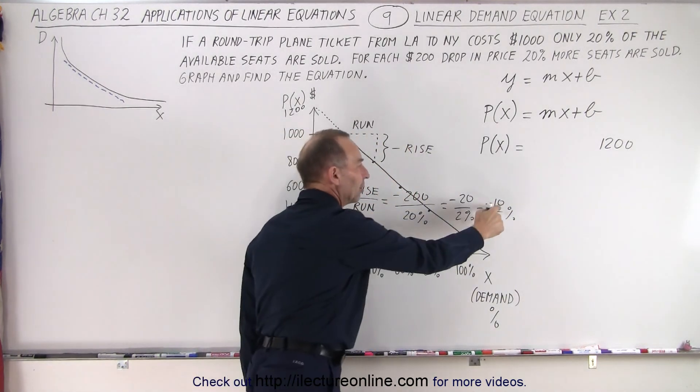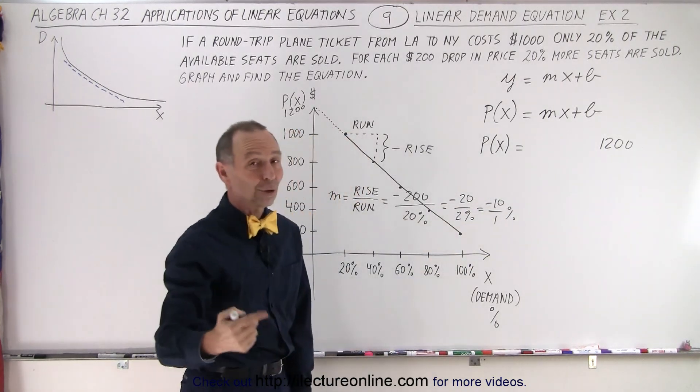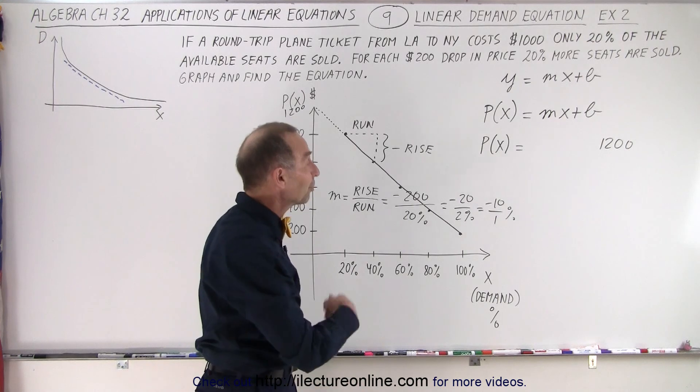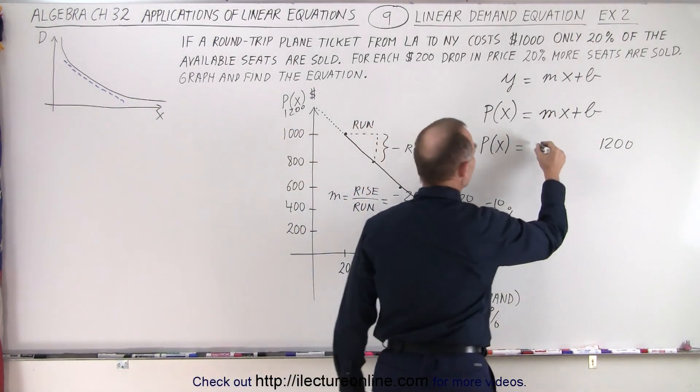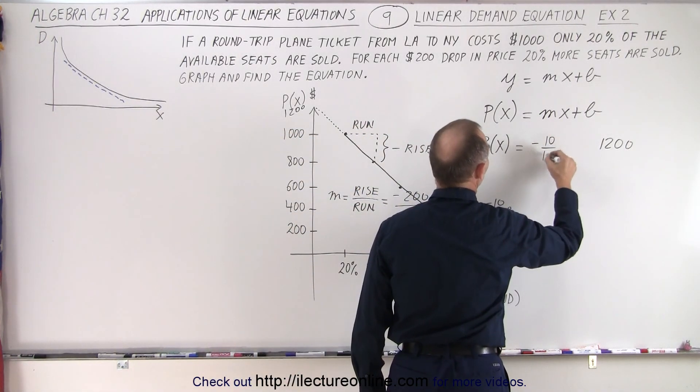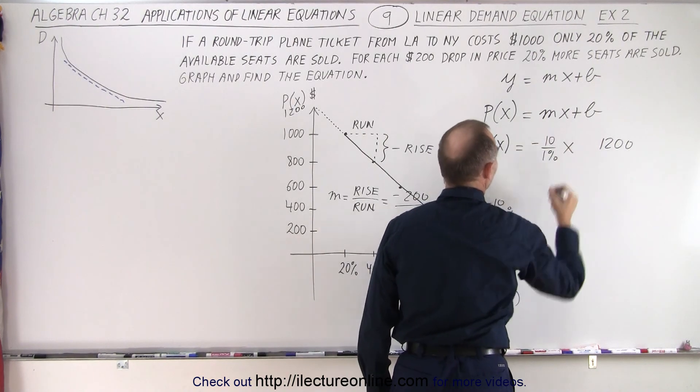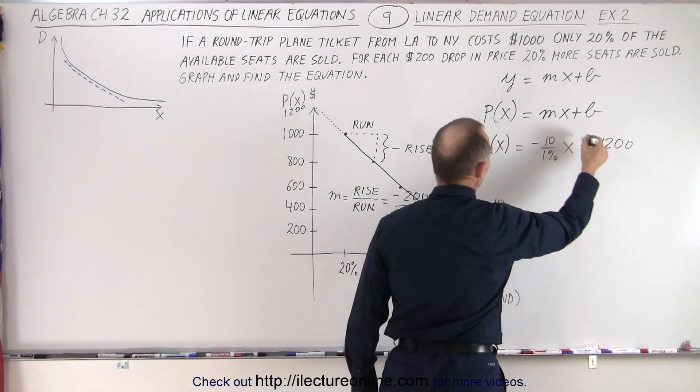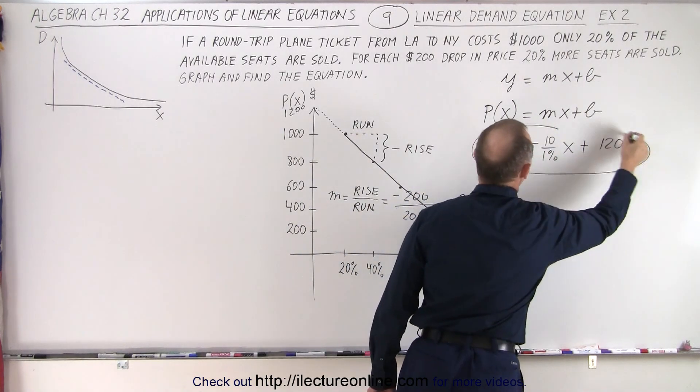So for every $10 drop, we sell an additional one seat. If there's 100 seats on the plane, or 1% of the seats. So the slope would be a minus 10 over 1% times x. And then, of course, we need a plus here. And so this would be the equation we want.